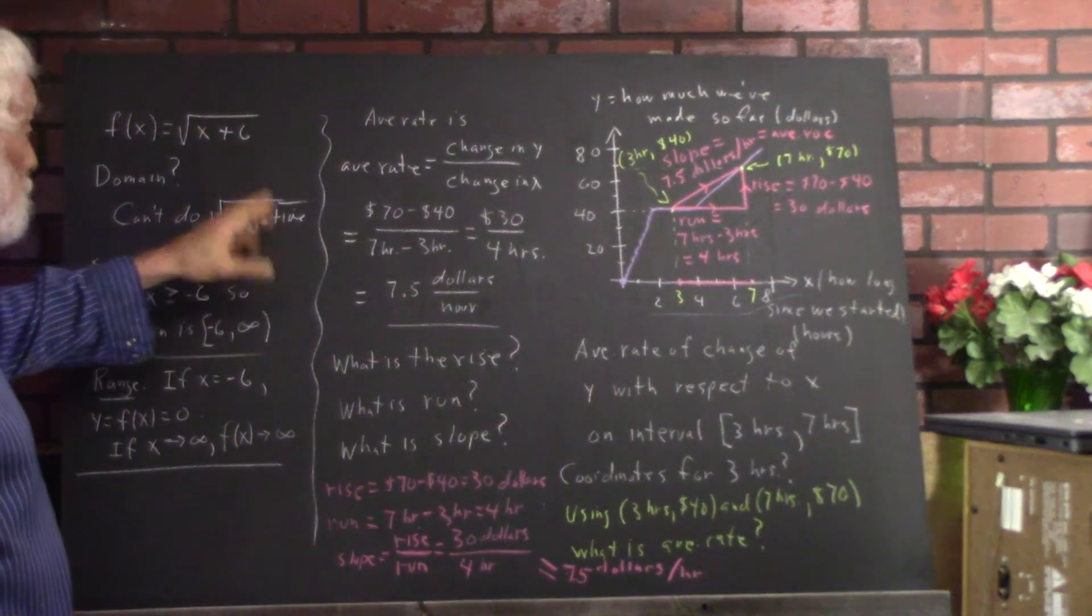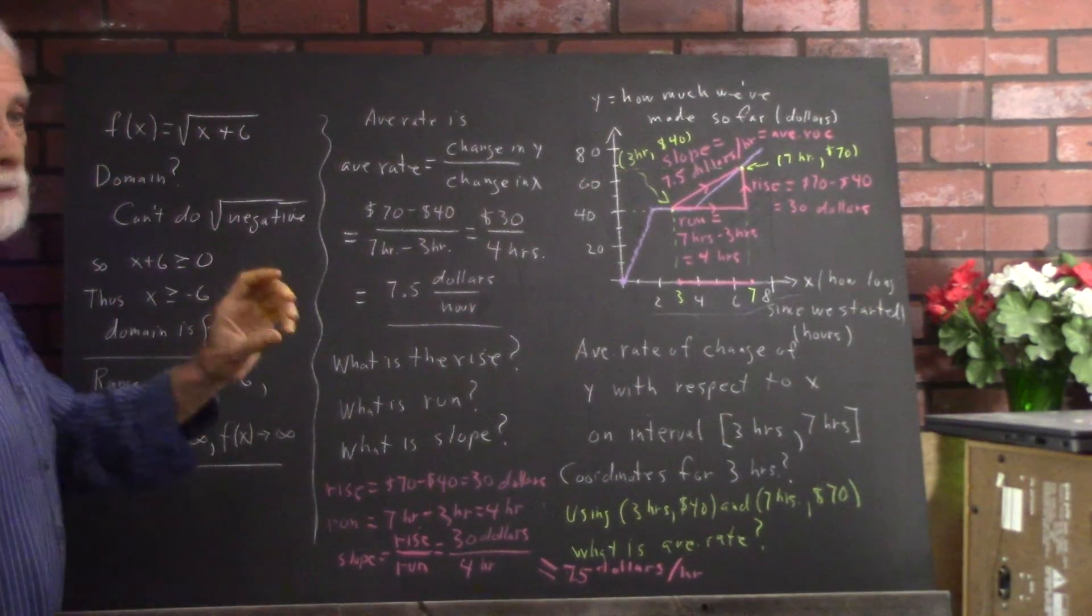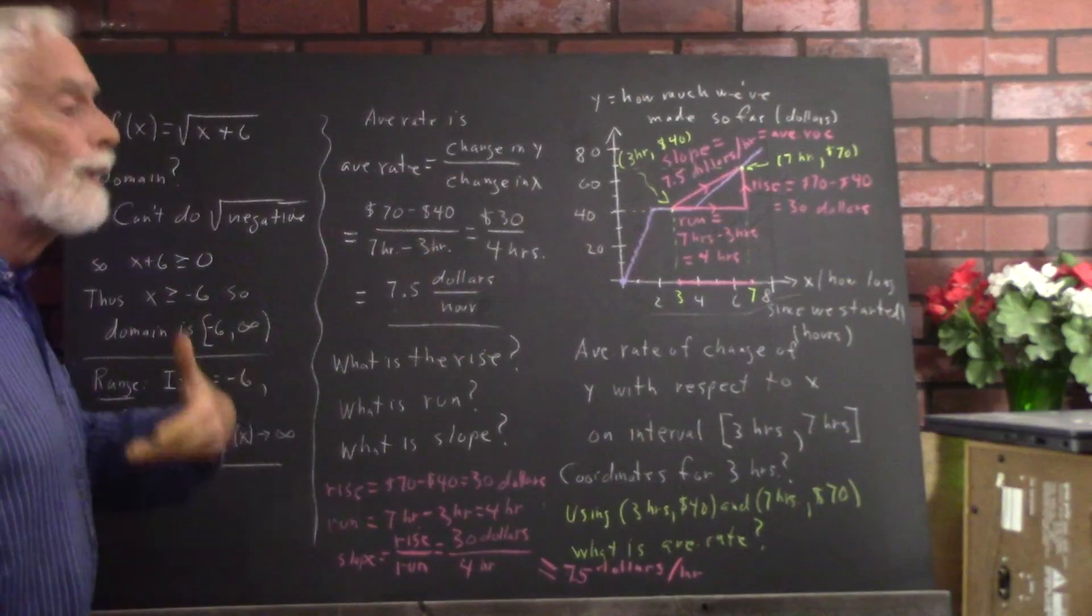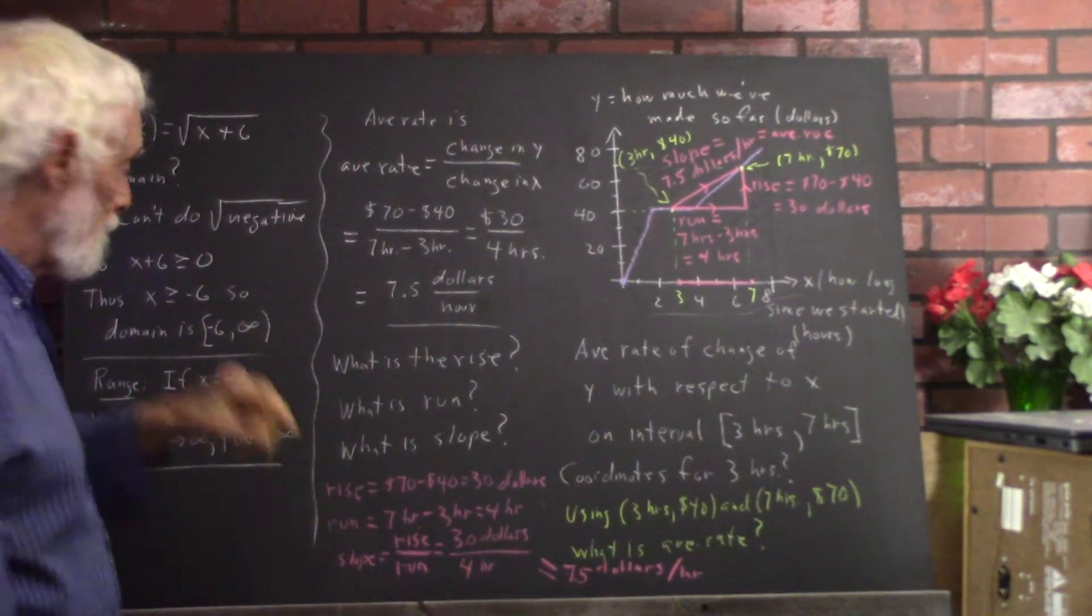Now really what I would say, if I want to say it accurately, is the square root of a negative is not a real number. And if we're in functions of a real number with real number values, you can't have that.